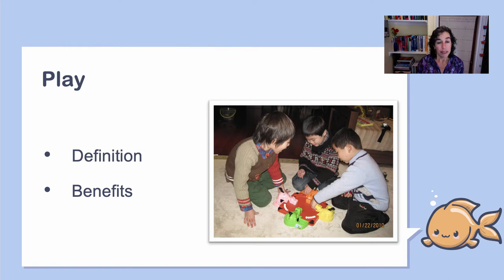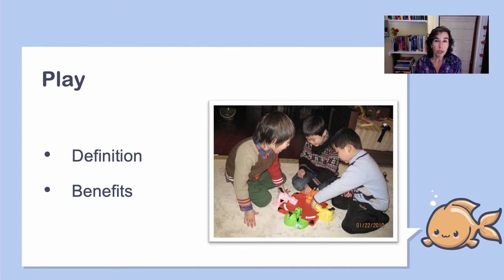In understanding the taxonomies of play, I recommend considering two questions. One is: what is the child playing with — in other words, what are the toys, resources, and materials? The other is: who are they playing with? We're going to go over both of those right now.